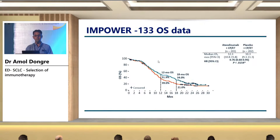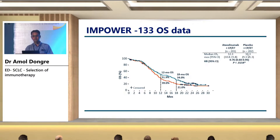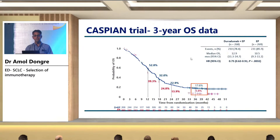Looking at the IMpower 133 OS data, after addition of atezolizumab to the EP regimen, the median OS is 12.3 months compared to 10.3 months in the placebo arm, with a hazard ratio of 0.76 — definitely an improvement. Similarly, in the CASPIAN trial, the three-year OS data shows that in patients who received durvalumab plus chemotherapy, the median OS is 12.9 months compared to 10.5 months with chemotherapy alone, with a hazard ratio of 0.75.